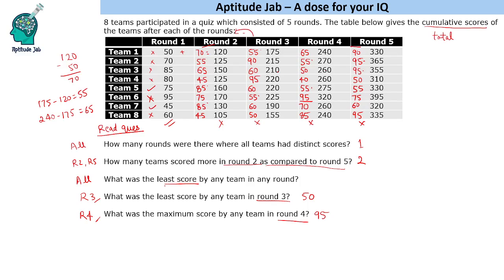Least score by any team in any round: looking across all rounds, the minimum we see is 45 up to a certain point, but we find a score of 40 which is the least across any of the rounds. So this was the solution to the set and the answers to all the questions.